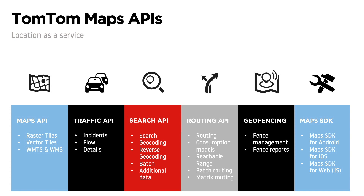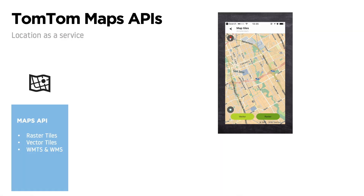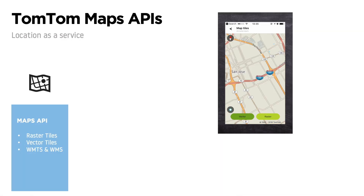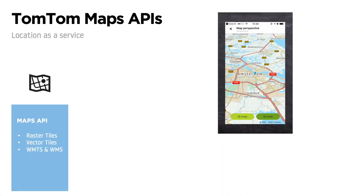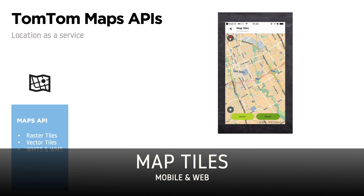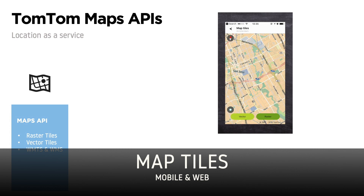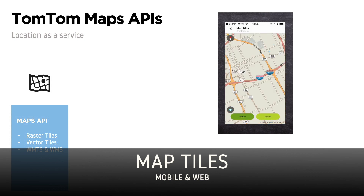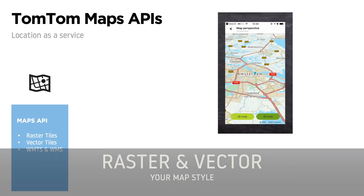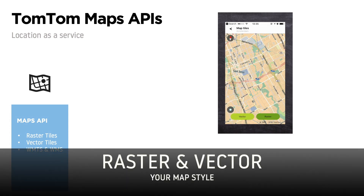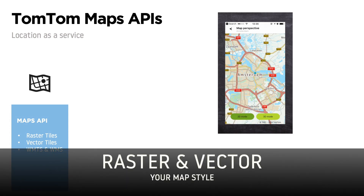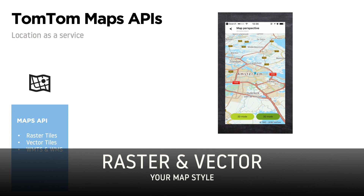TomTom offers developers six different products to make your location-based application. First, we have the Maps APIs. These enable static and interactive maps to be displayed in mobile and web applications. Map tiles come in raster or vector format and they can be styled so you can make them your own.